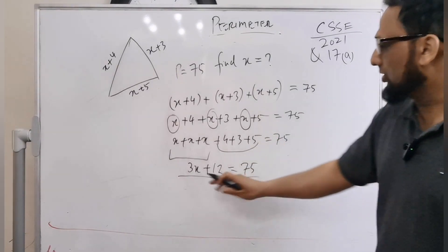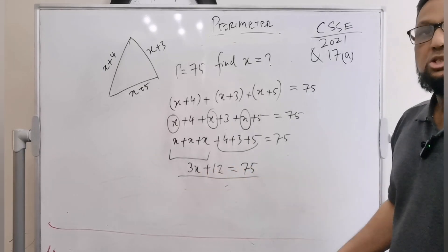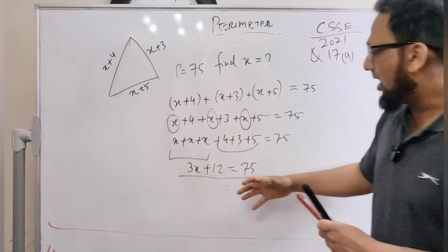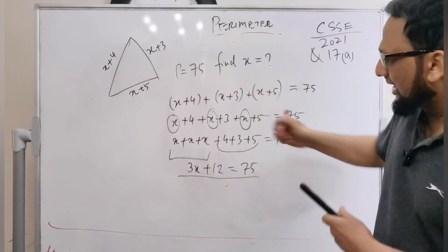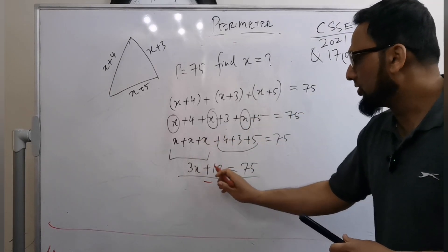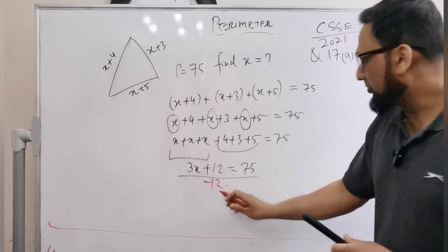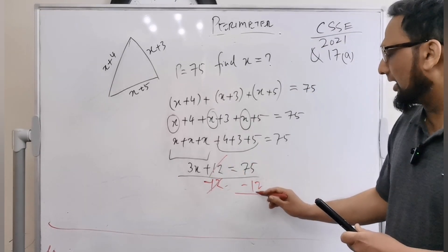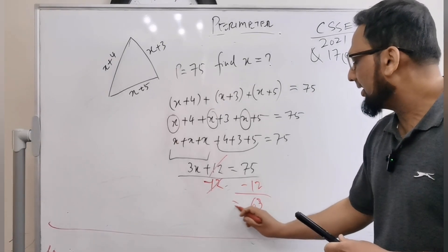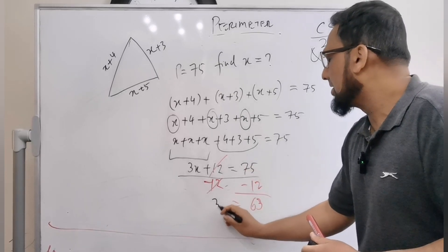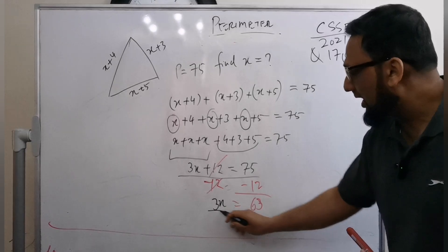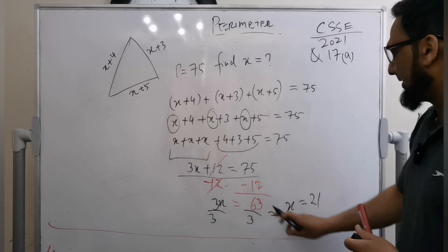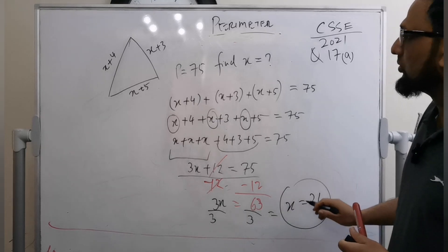Now we solve the equation 3x plus 12 equals 75 using algebra. To get rid of the 12, we subtract 12 from both sides: plus 12 minus 12 cancels, and 75 minus 12 equals 63. So 3x equals 63. Dividing both sides by 3, x equals 21.